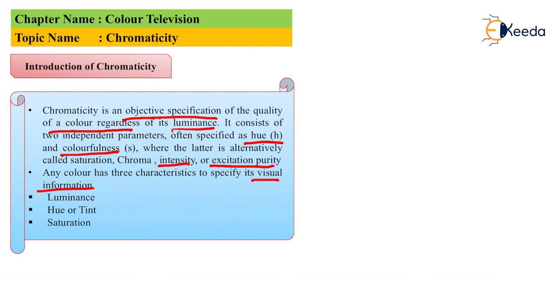The three important parameters are luminance, second parameter is hue or tint, and third parameter is saturation. Now let's understand these parameters one by one.